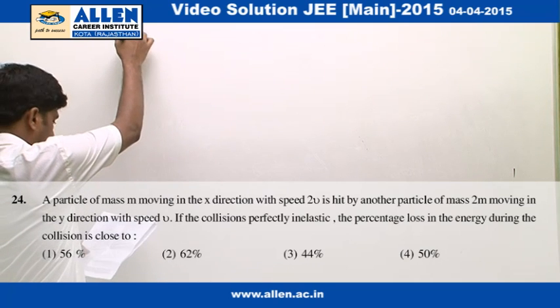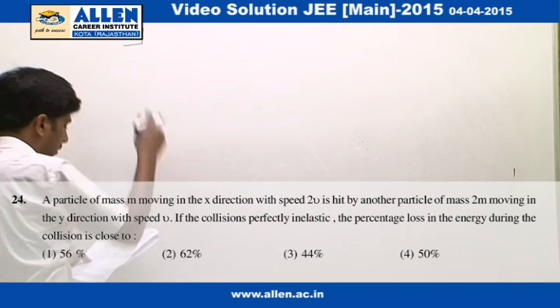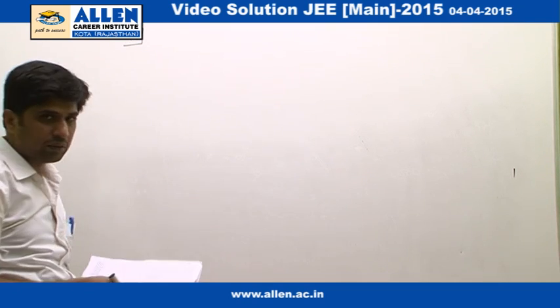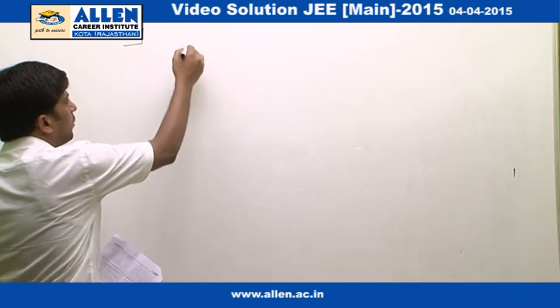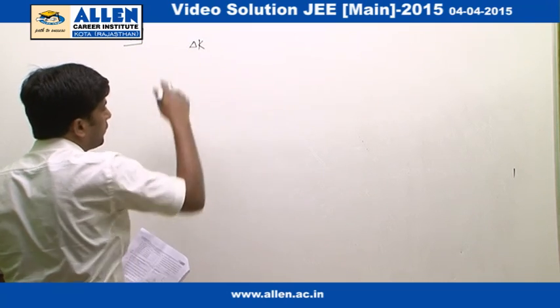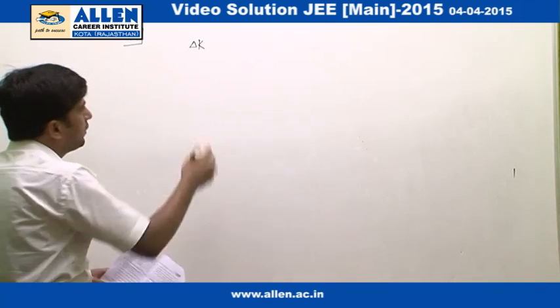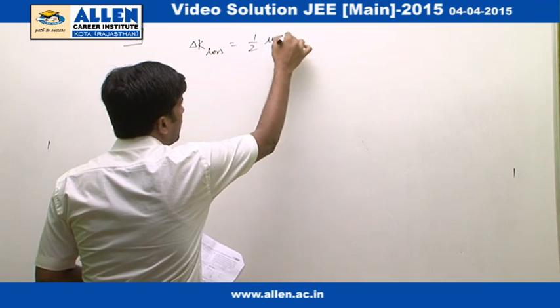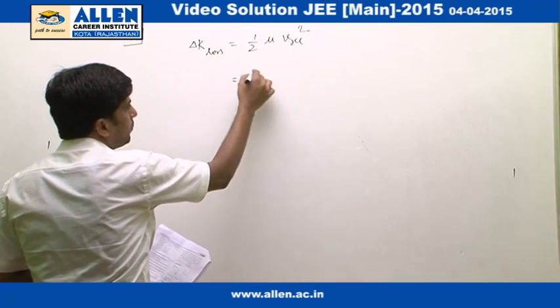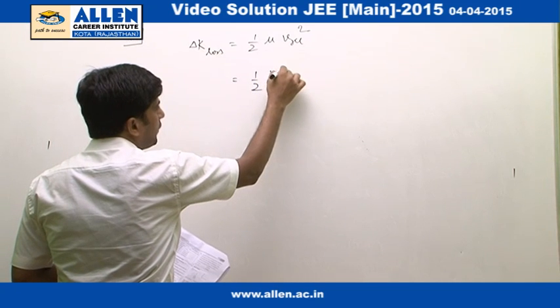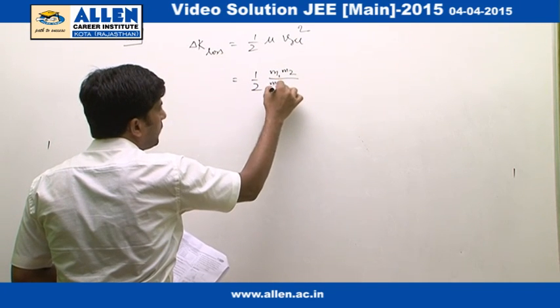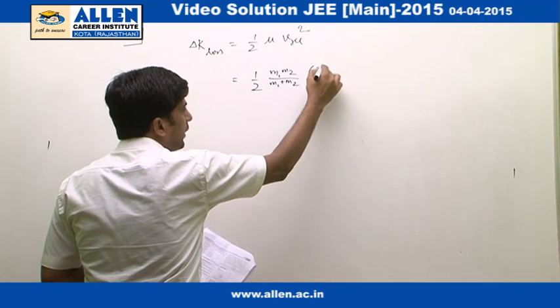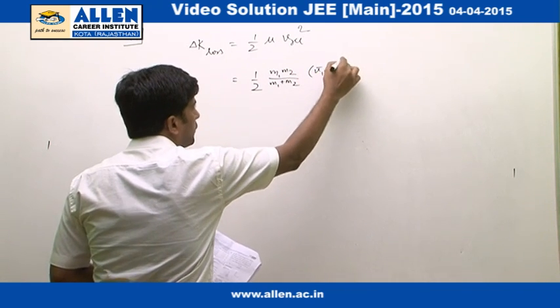Question number 24. Percentage loss in the energy during the collision is asked. As we know that loss in kinetic energy in case of perfectly inelastic collision is given by half mu V relative square, where mu is M1 M2 upon M1 plus M2 and V relative is V1 vector minus V2 vector whole square.